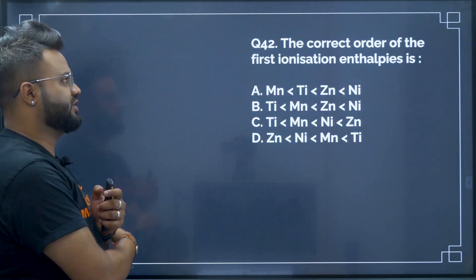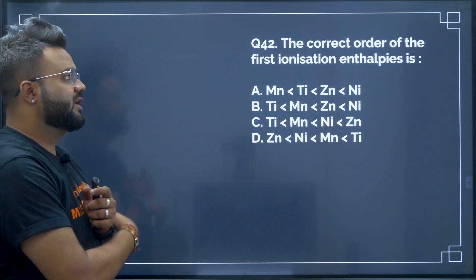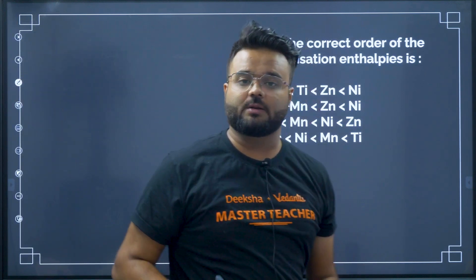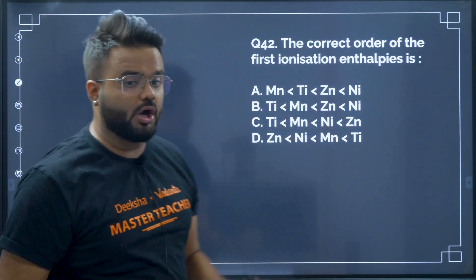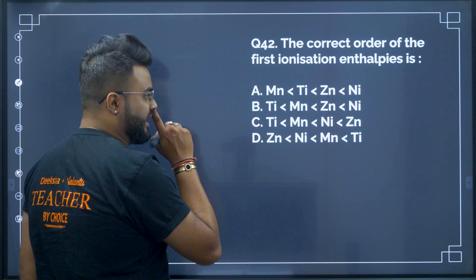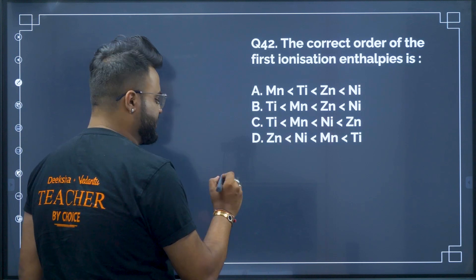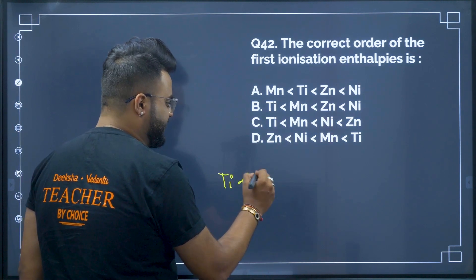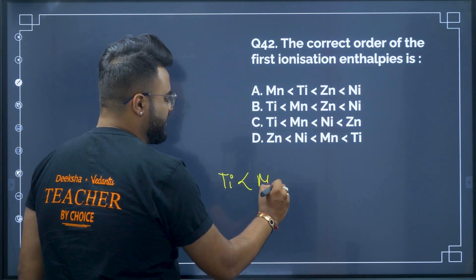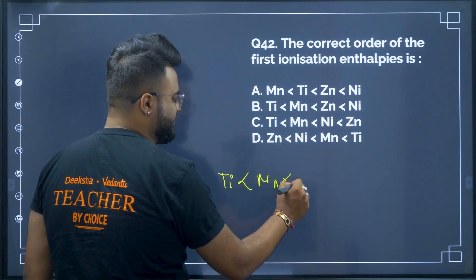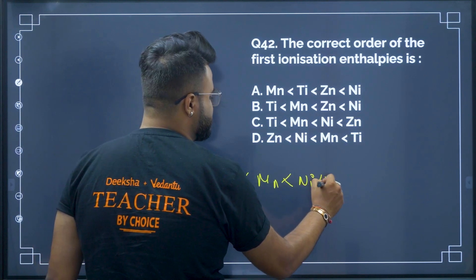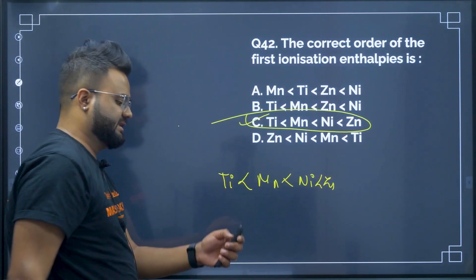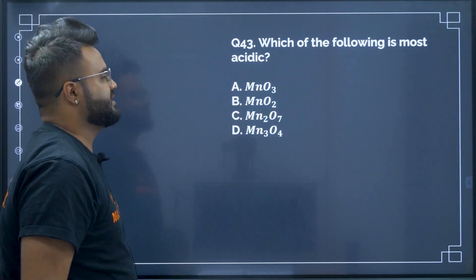Question number 42: the correct order of the first ionization enthalpies. The correct order is Ti < Mg < Ni < Zn. Therefore option C will be your correct answer.